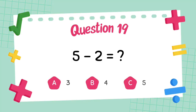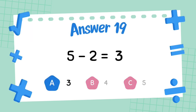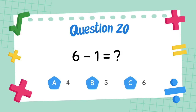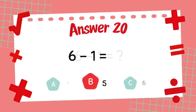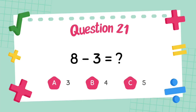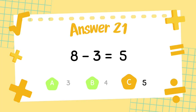What is 5 minus 2? The answer is 3. What is 6 minus 1? The answer is 5. What is 8 minus 3? The answer is 5.